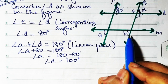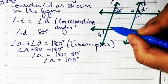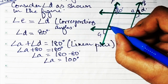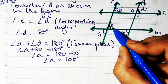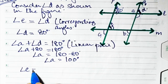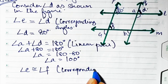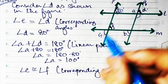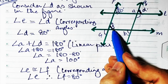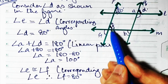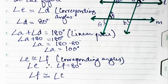Now we need to find c and b. Angle e is 80°, so let's call the next angle f. Angle f will also be 80° because e and f are corresponding angles — therefore e is congruent to f. Since e is 80°, f is also 80°. Now f equals c because they are vertically opposite angles.